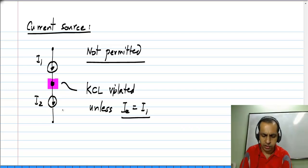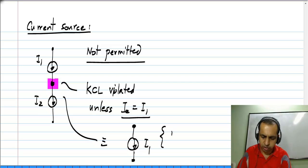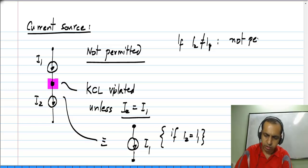If this is the case, then this whole thing is equivalent to a single current source of value I1. And if I2 is not equal to I1, then this connection is not permitted.